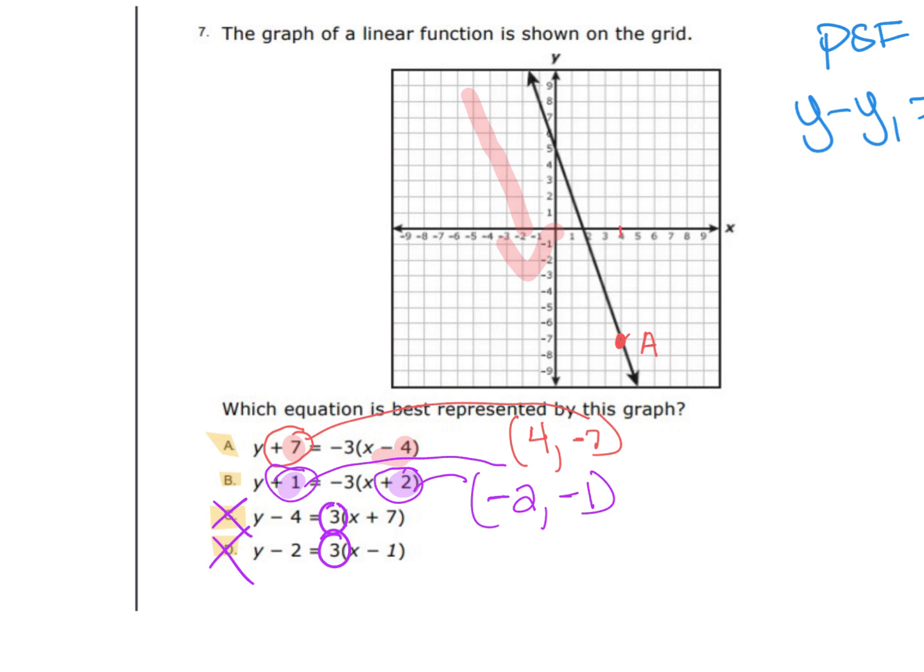So here is negative 2, negative 1. There is my point B. That function is nowhere near that point. So I'm very comfortable with choosing A as my answer.